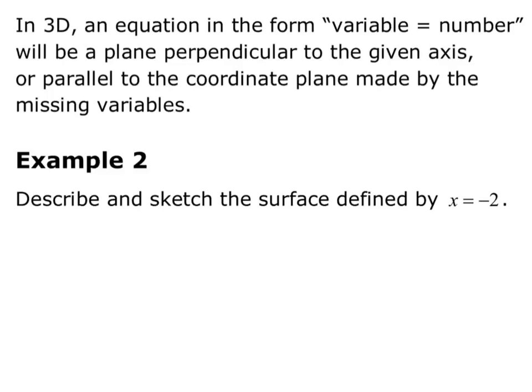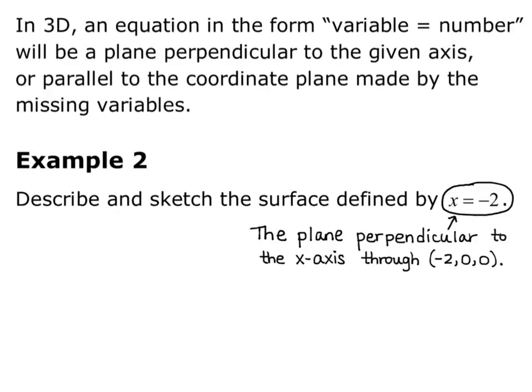In this example, we want to describe and sketch the surface defined by x equals negative 2. Given the description above, we know that x equals negative 2 is the plane perpendicular to the x-axis through the point negative 2, 0, 0.